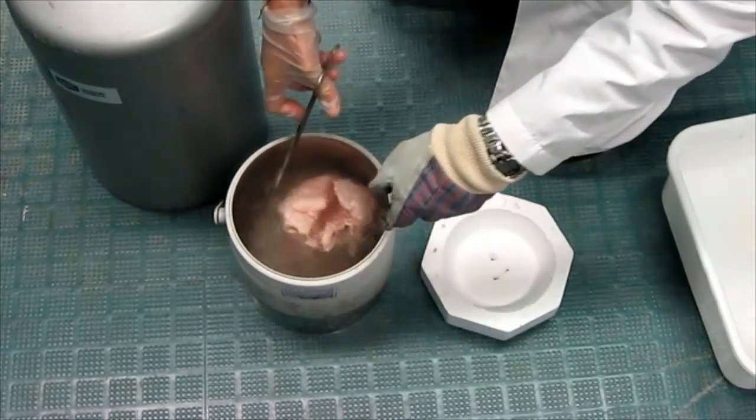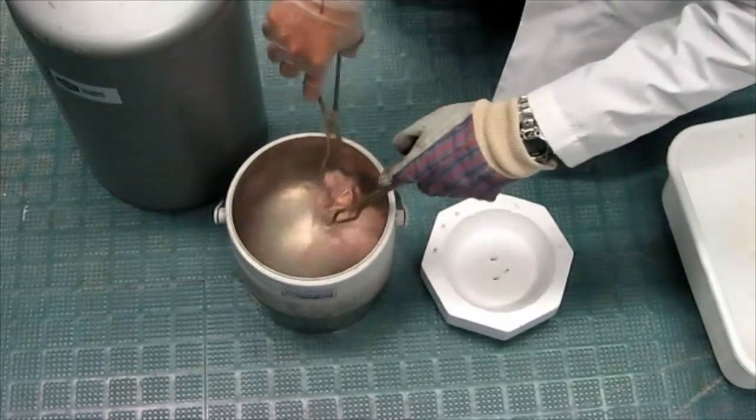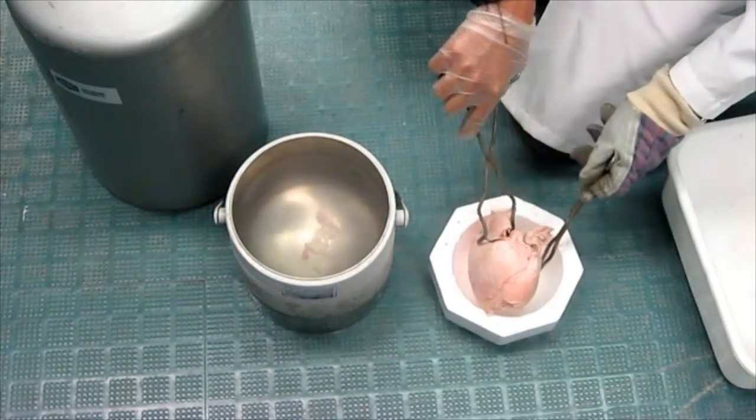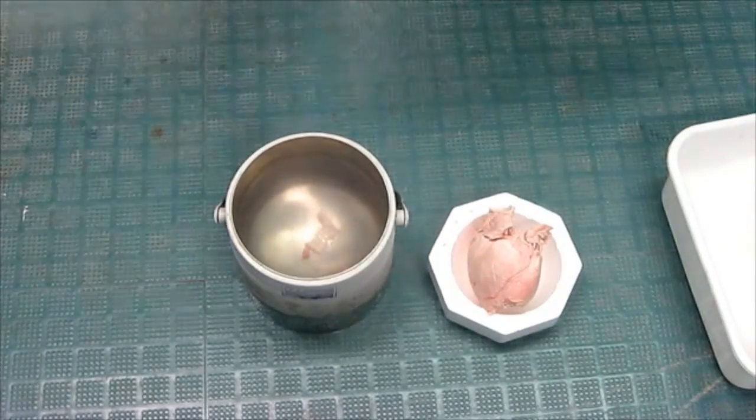The reason why it looks so different is because the contents of each and every cell is completely frozen. Even the fats and proteins that don't normally freeze, at liquid nitrogen temperatures they do.